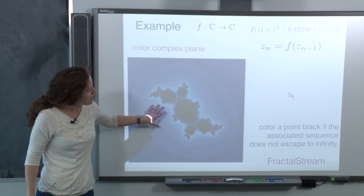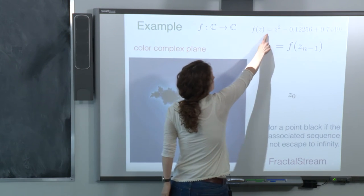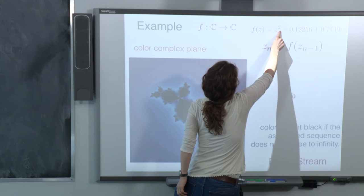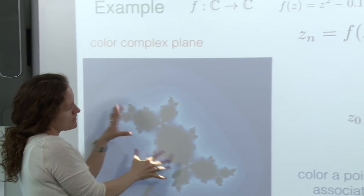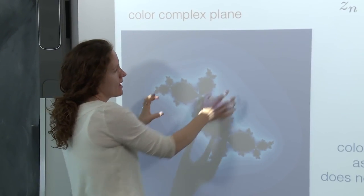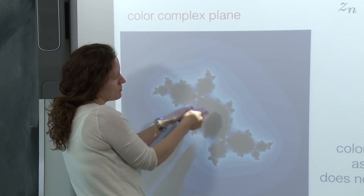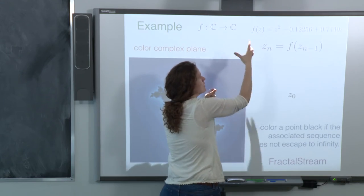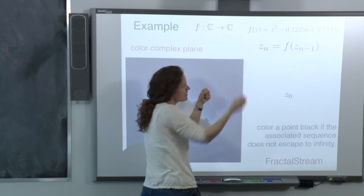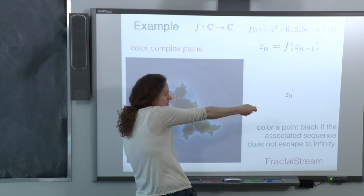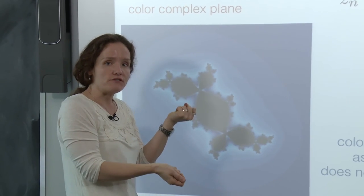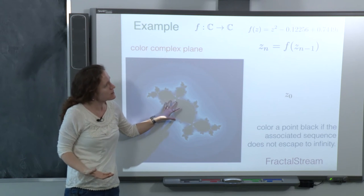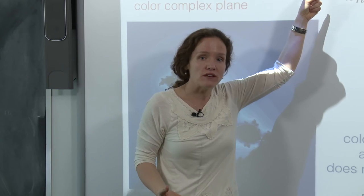For every different quadratic polynomial of the form z squared plus c, I get an associated picture with black points — where the sequence is bounded — and purple points — where it shoots off to infinity. You get very different shapes. We might ask: how do we understand the different shapes according to the different polynomials? For example, z squared minus 2.5 gives something that looks quite different — in fact it's a Cantor set, a dust of points that's very hard to see. Many points are colored purple, meaning their sequences shoot off to infinity.